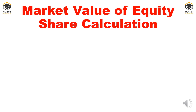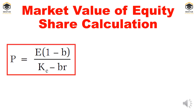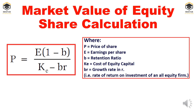To calculate the market value of a share under Gordon's model, the formula is: P = E(1 − b) / (ke − br), where P is the market price of the share, E is earnings per share, b is the retention ratio — which equals 1 minus the dividend payout ratio — ke is the cost of equity, and br is the growth rate. For example, if the dividend payout ratio is 20%, the retention ratio b is 80%.